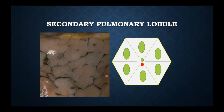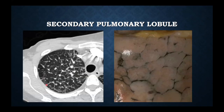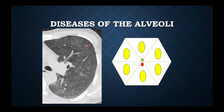On CT scan we see the same findings: the interlobular septa with the veins and lymphatics — the scaffolding of the lung. This black area is the alveoli, and in the middle of each secondary pulmonary lobule is a pulmonary artery. If you look at this CT scan, we see a lot of round circles, so we know that the disease must be related to the alveoli.